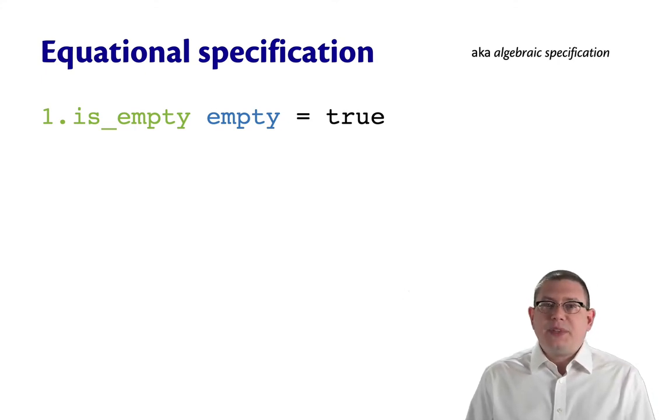First, is_empty empty is equal to true. So notice this is equational because I'm using an equality in the middle here. I'm saying that two program expressions are equal, and it's about the operations and how they interact with one another. So here I'm saying that if you apply the operation is_empty to the value empty that's part of the specification, then you get back true.